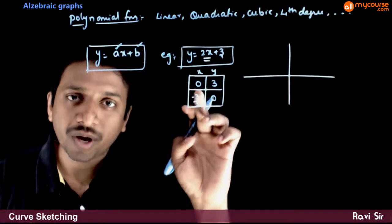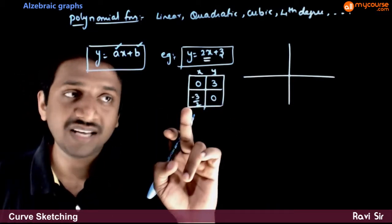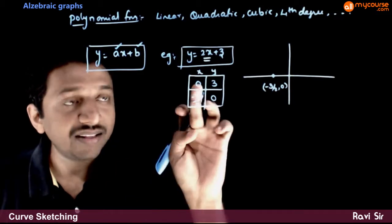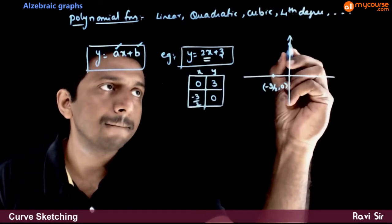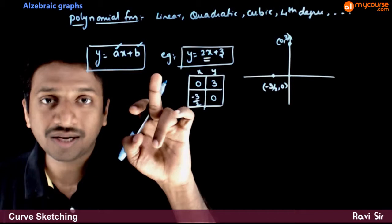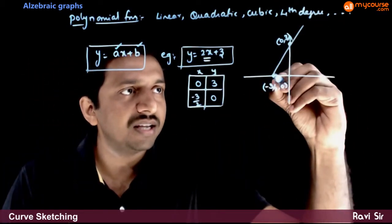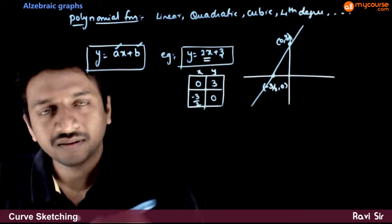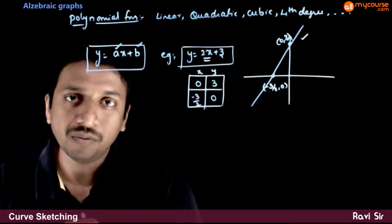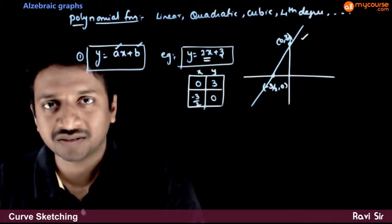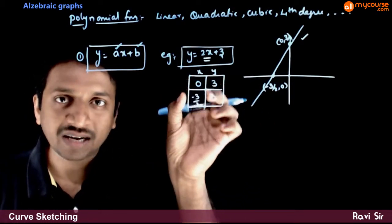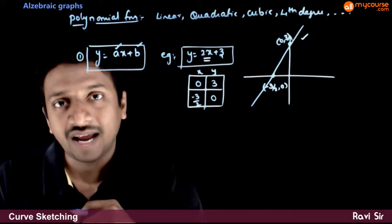So you found two points on this curve. The first is minus 3 by 2 comma 0, and the other point is 0 comma 3, which is 0 comma b. Once you get two points on this curve, we know that this curve is a straight line. Hence you get the graph. So it is very easy to draw the graph of y equal to ax plus b. Just get two points on the curve and join them with a straight line. The easiest points are the points of intersection of the line and the axes.